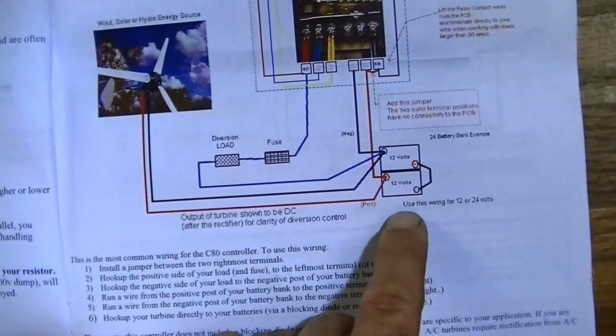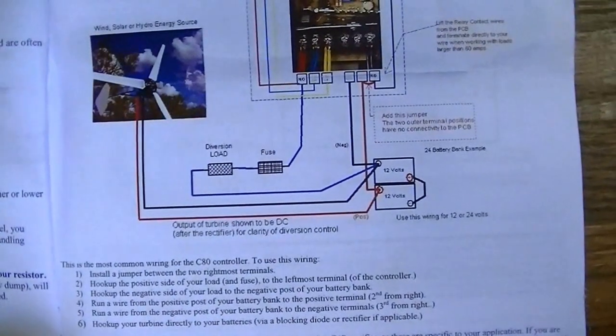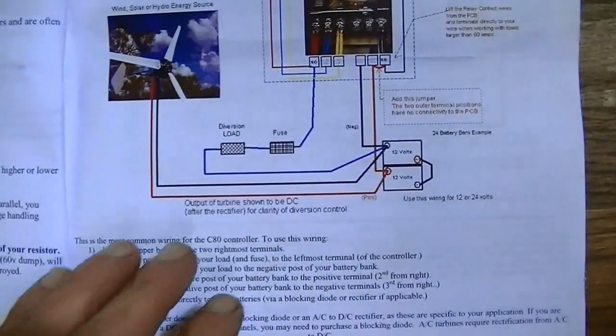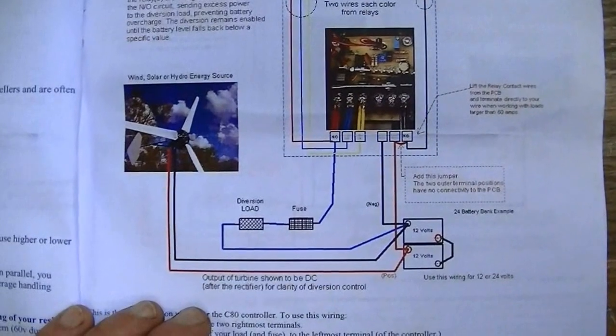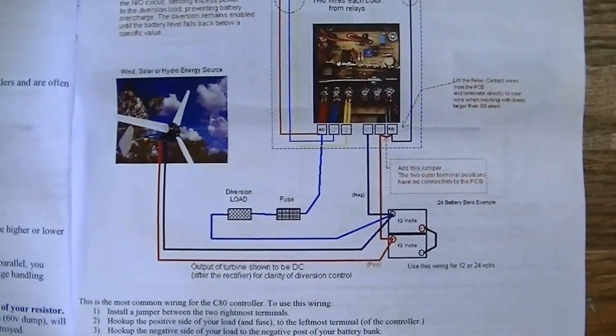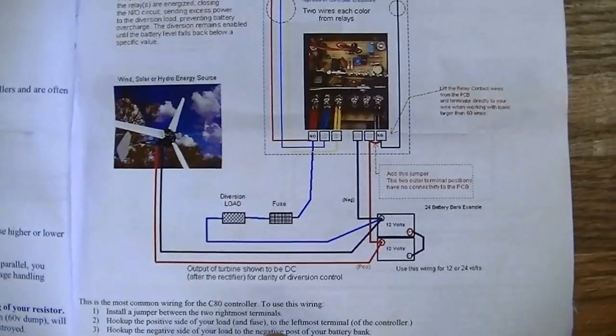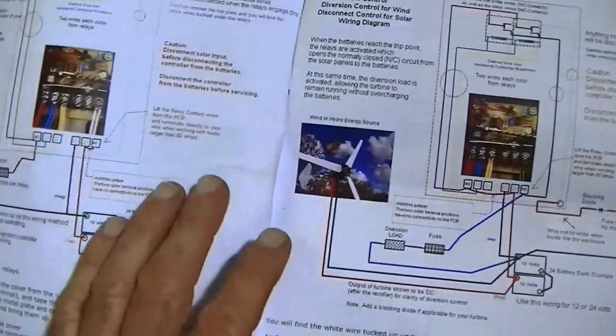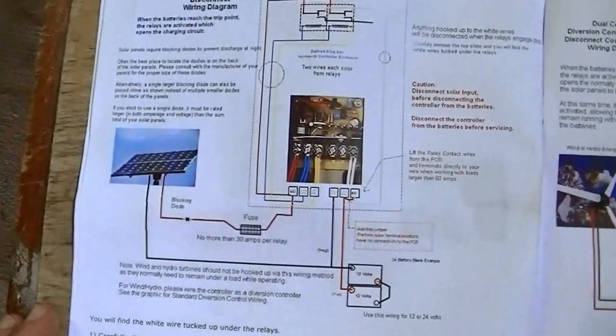Now this is shown on a 24-volt system, but you can wire it the same for 12. A windmill or a hydro system always has to have a load on it, so when the batteries are charged it goes into a diversion load. What I'm going to be hooking up today is just your simple solar panel system.